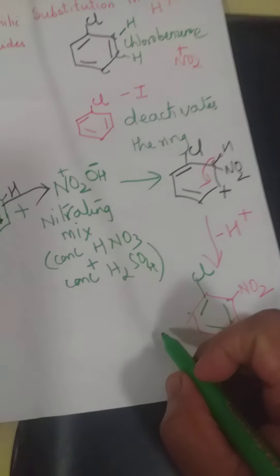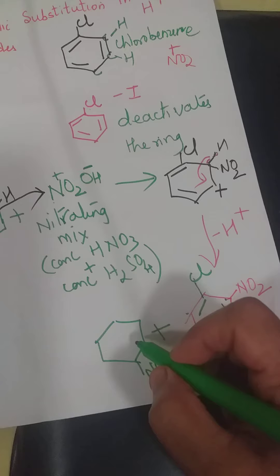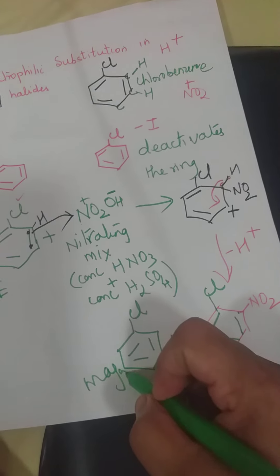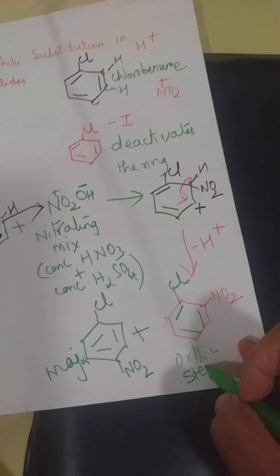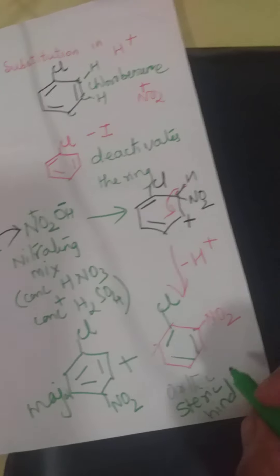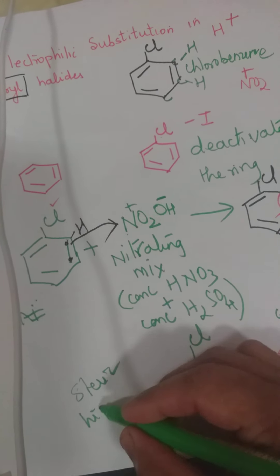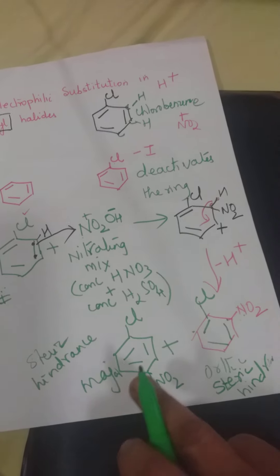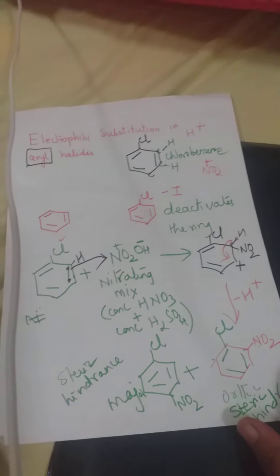Lekin yeh minor product hota hai, major product kahan pe substitution hota hai, at the para position, yahan pe. Aur repulsion ke liye, hum yahan term use karte hai, steric hindrance, takleef, bada group honay ke wajay se, woh aane nahi deta hai, we call it as steric hindrance. Bagal mein kya hota hai, steric hindrance, aane mein takleef hoti hai, so substitution, sab se zyada yeh position mein, preferably always substitution will take place, either at ortho position, or para position, para will be major, and ortho will be minor product. Meta pe to nahi hota hai.